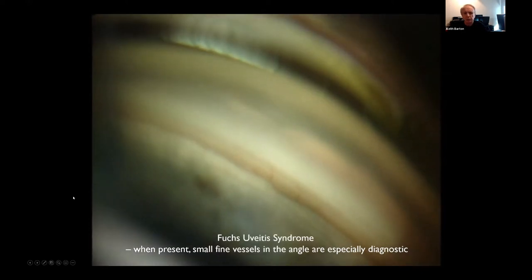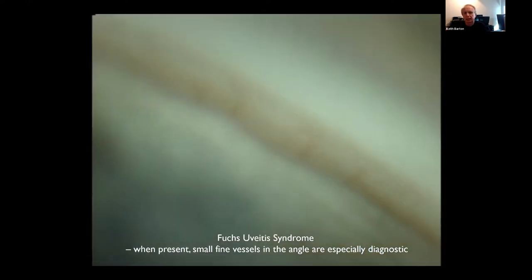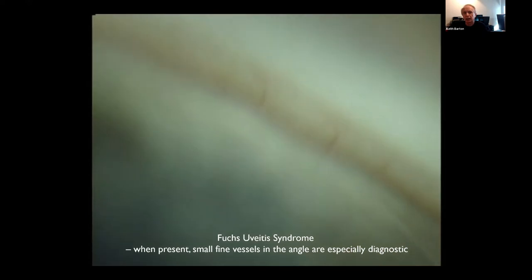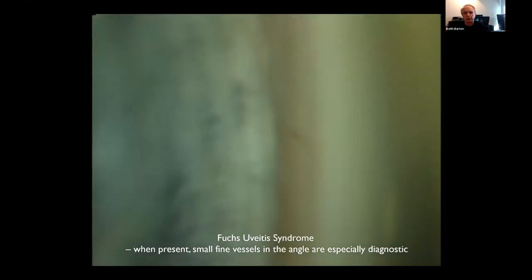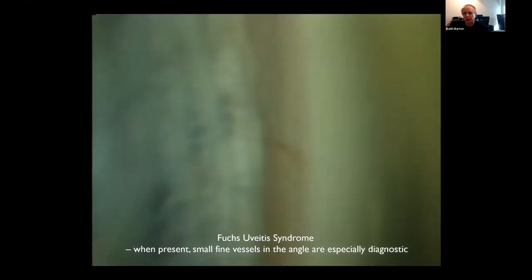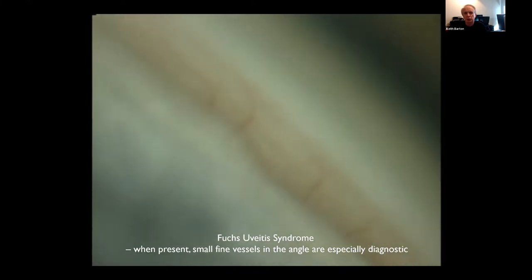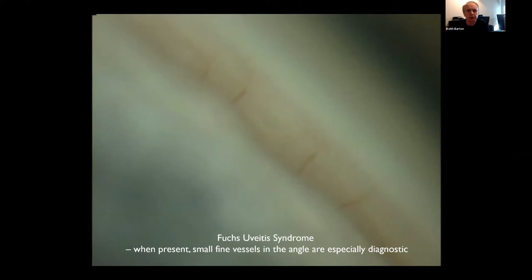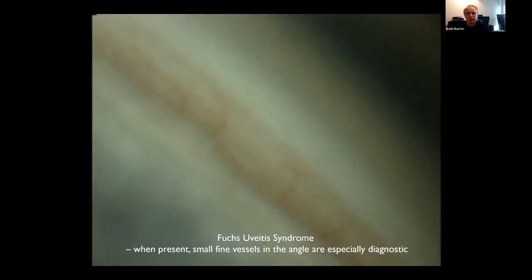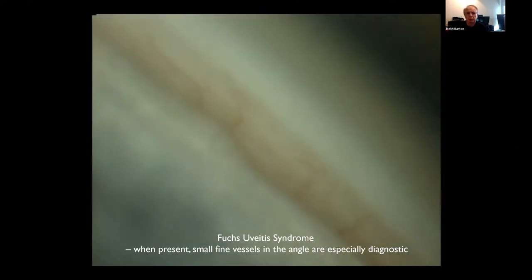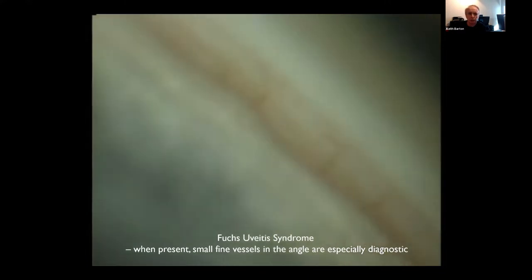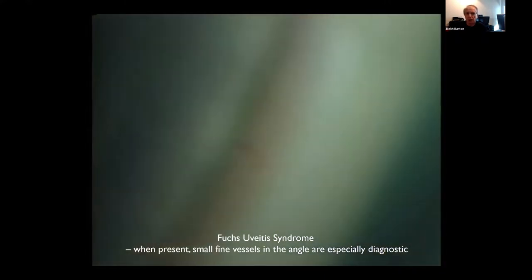Fuchs uveitis syndrome is interesting. You see these little vessels in the angle, and when present these are diagnostic. It's rare to see as many as you do here — this is unusual. These are the vessels that cause Amsler sign, and typically if you see them there's only one or two in the angle. This patient had about a dozen or two dozen, which is very unusual.